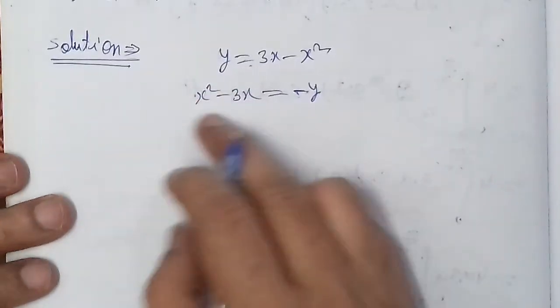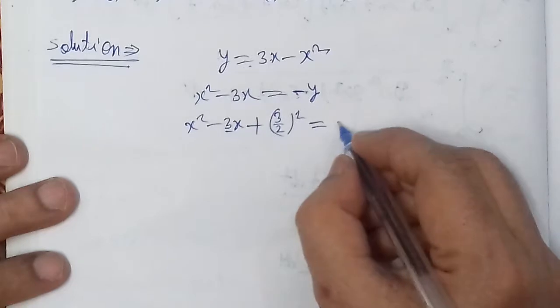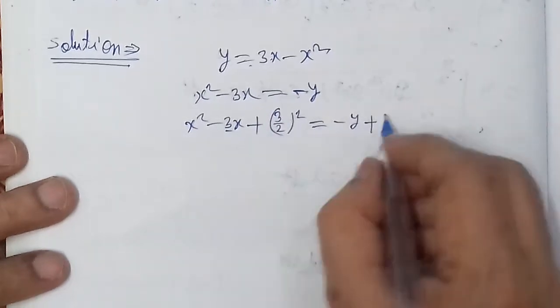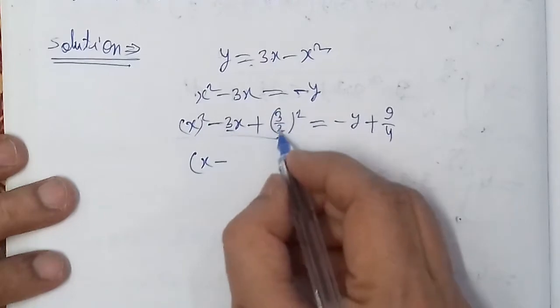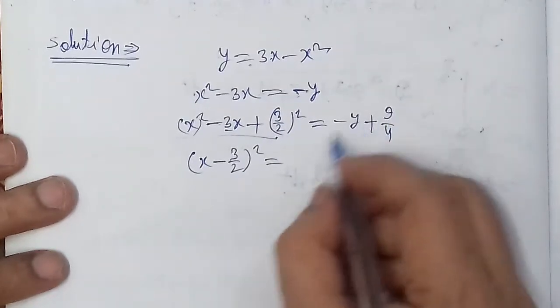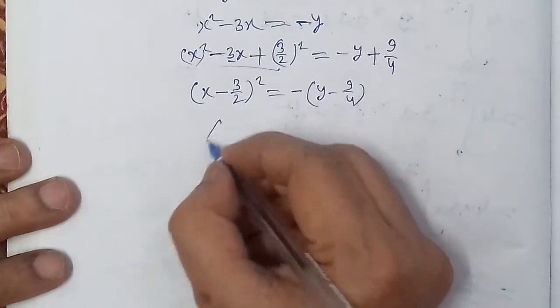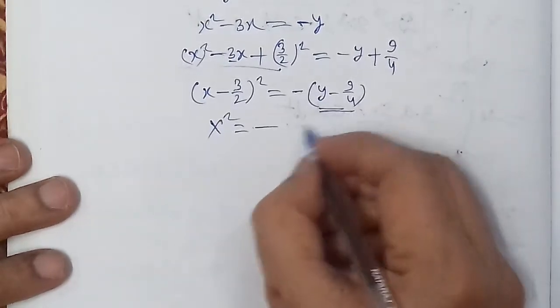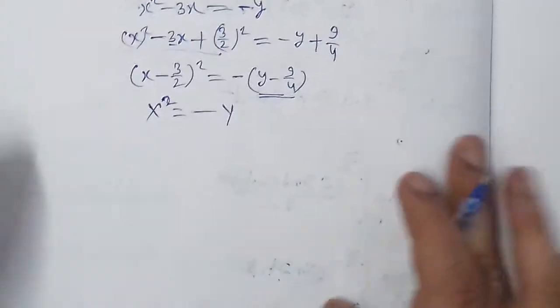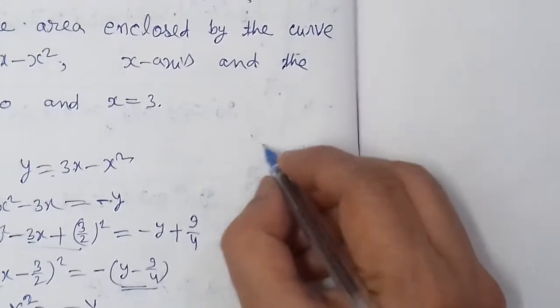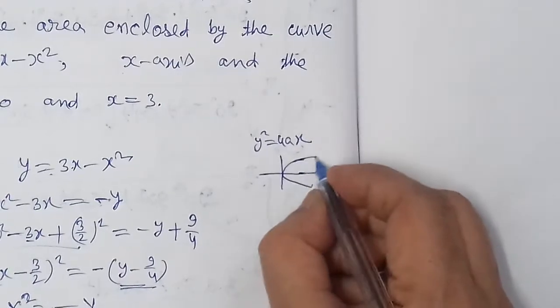Completing the square: x squared minus 3x plus 9/4 equals negative y plus 9/4. So we get (x - 3/2)² equals -(y - 9/4). This is a parabola equation.